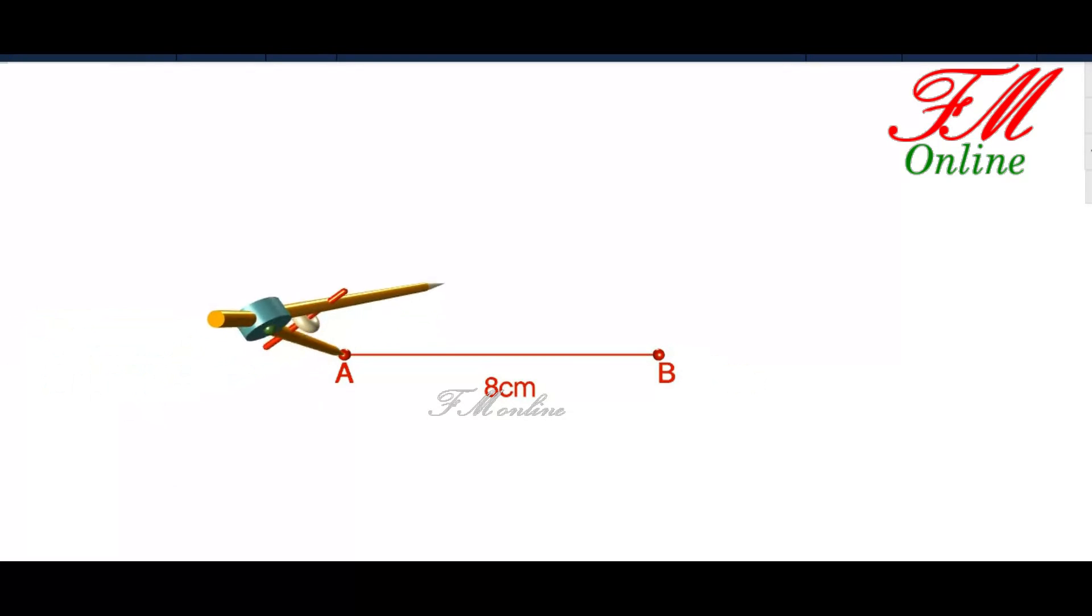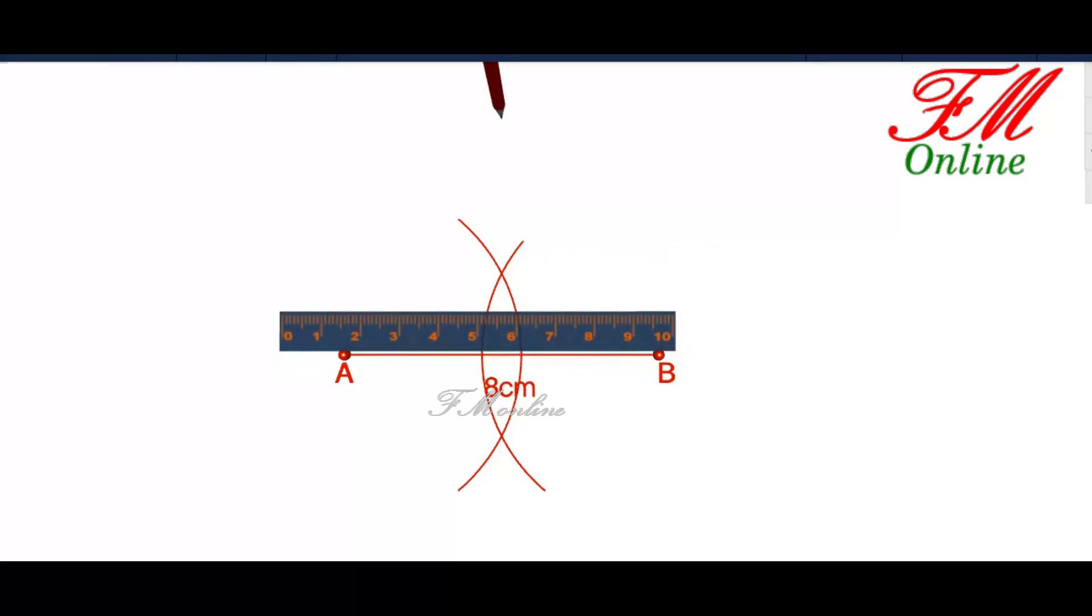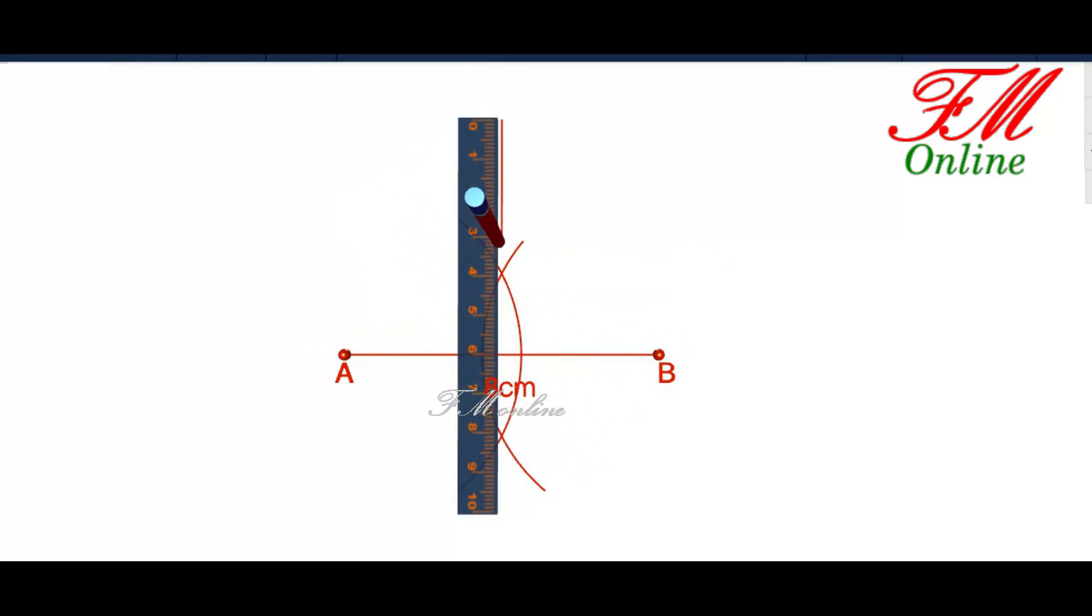Next, draw the perpendicular bisector of AB. Mark O as the center of AB.